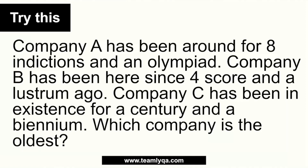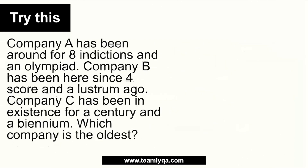Another scenario would be for it to be incorporated in the question itself. For example: Company A has been around for eight indictions and an olympiad. Company B has been there since four score and a lustrum ago. Company C has been in existence for a century and a bienium. Which company is the oldest? So it means when you work through this, you need to know these terms. If you don't know the terms, you will have a bit of trouble here.